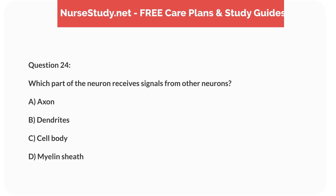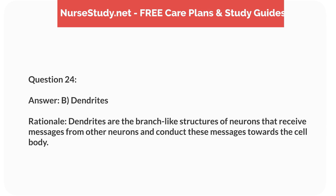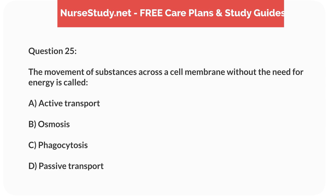Question 24: Which part of the neuron receives signals from other neurons? A) axon, B) dendrites, C) cell body, D) myelin sheath. Answer: B, dendrites. Rationale: Dendrites are the branch-like structures of neurons that receive messages from other neurons and conduct these messages towards the cell body.